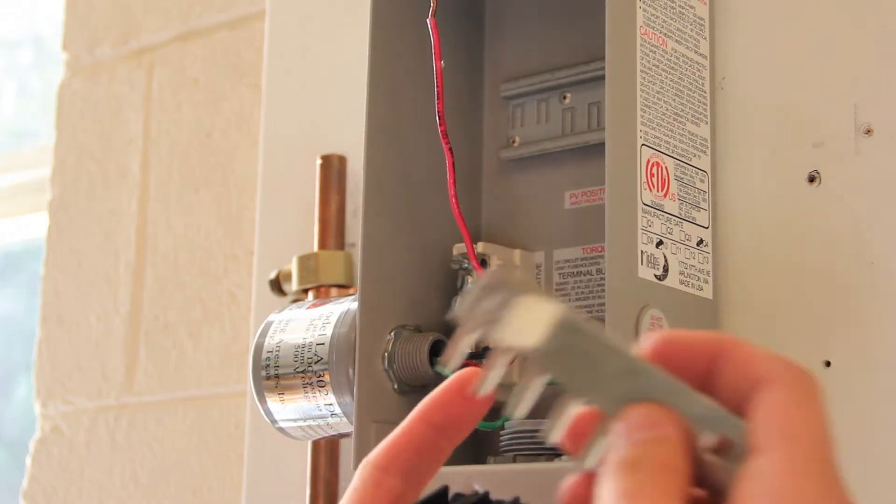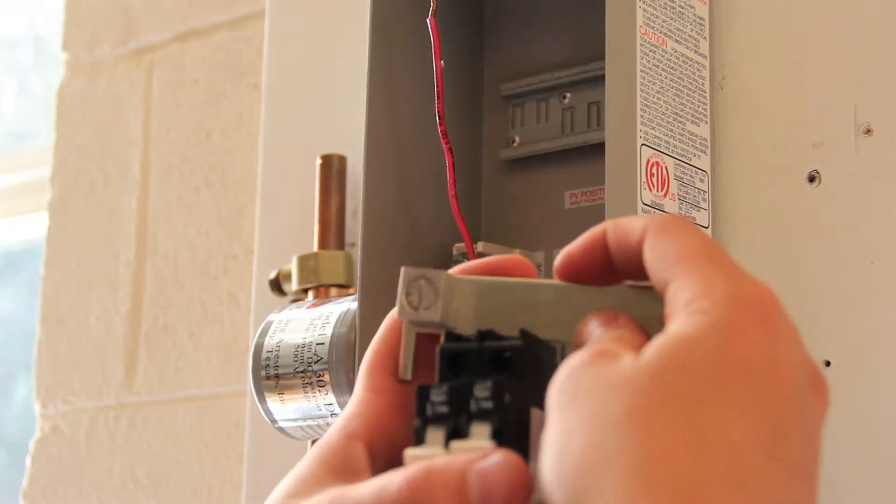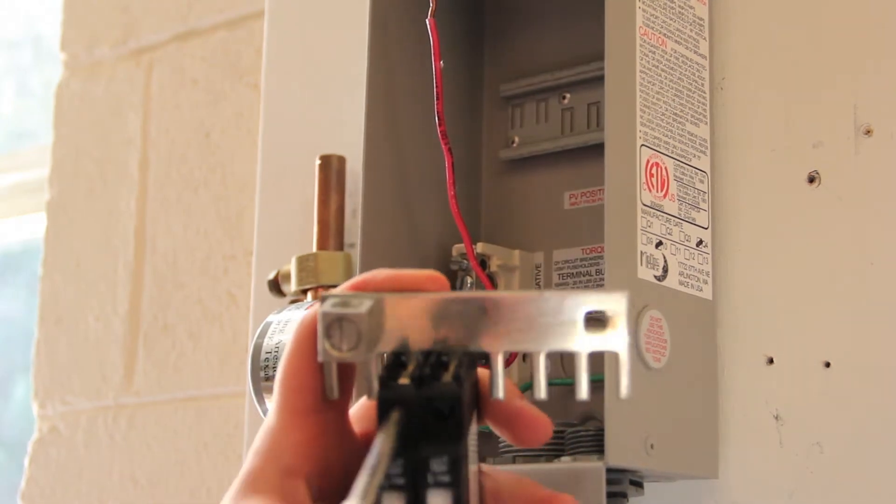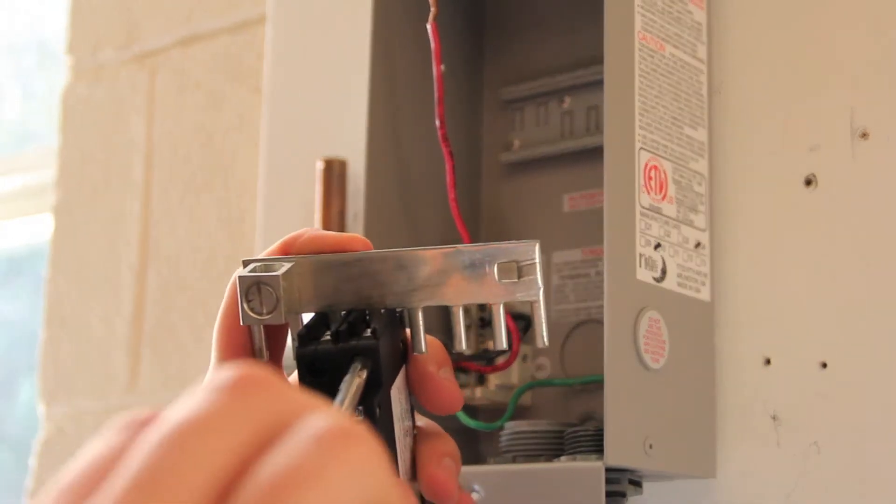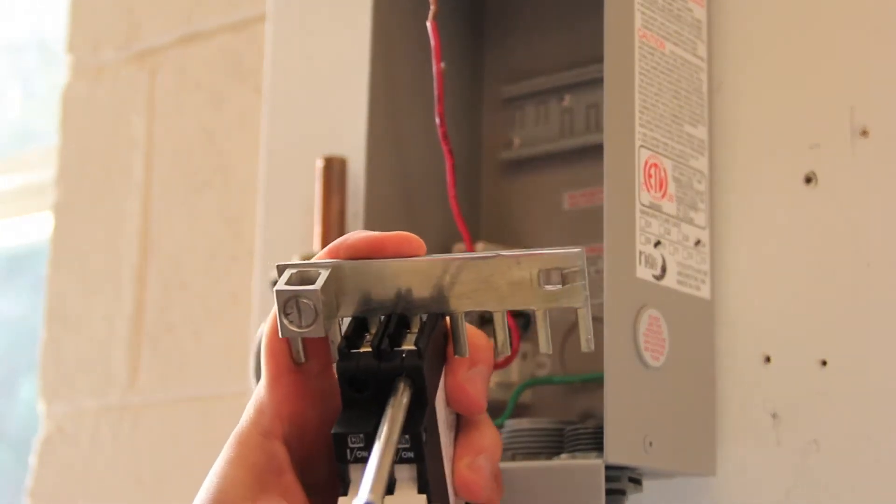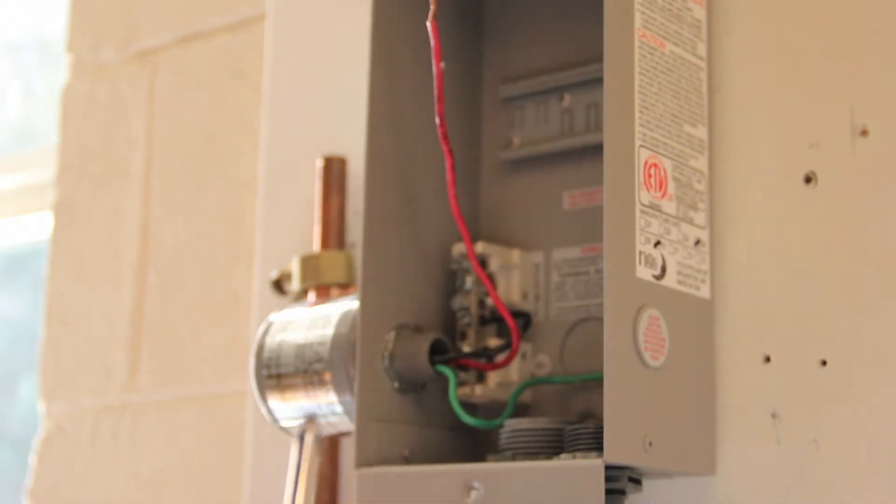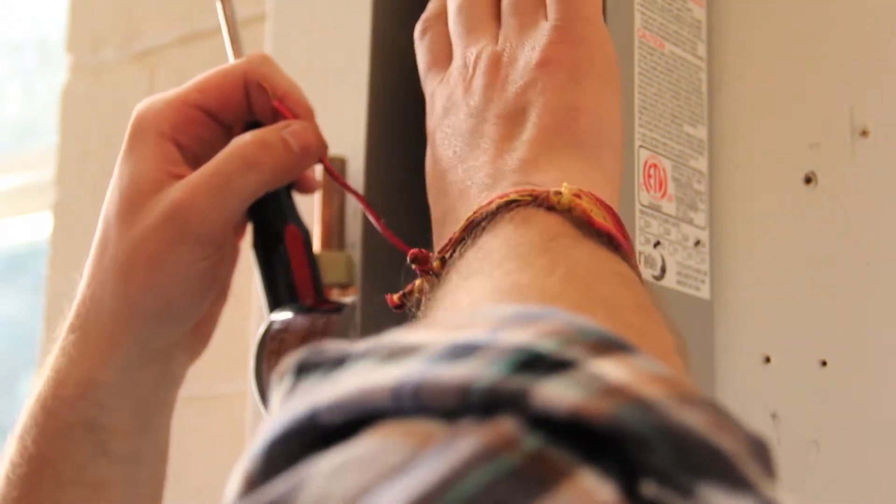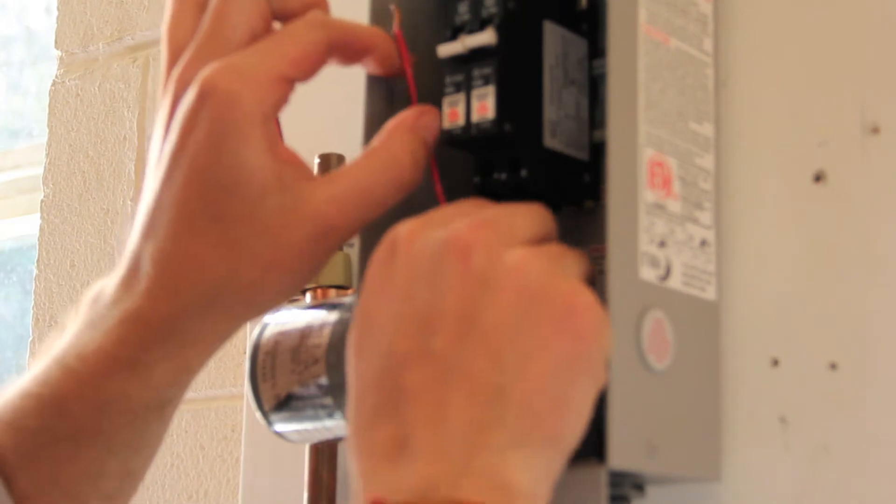These breakers attach to the combiner rail in such a way. And then we'll tighten these down. Put our breakers on our DIN rail, clip them into the DIN rail.